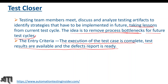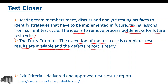All defects should be reported to the developer, fixed by them, and closed. So the defect report being ready means all defects are fixed and closed. That is the entry criteria for test closure activities. For exit criteria, we should have the delivered and approved — and signed — test closure report from the client. That signed copy represents the exit criteria for test closure.